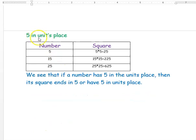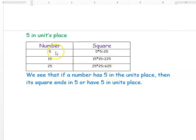Similarly, we will see the number 5 in the units place. The number 5 squared is 25. If the number is 15, its square is 225. If the number is 25, its square is 625. So if the number ends with 5 in its units place, then its square will also have 5 in its units place.